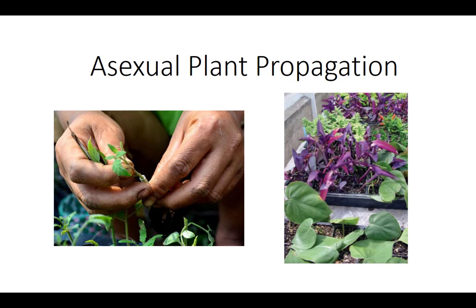One of the most important benefits of asexual propagation is that plants produced by this method are genetically identical to the parent. A plant that is grown from a piece of another plant and is genetically identical to the parent plant is known as a clone. Trees and woody perennials are typically propagated by means of asexual propagation to preserve the genotype clonally and reduce breeding time. I'm Dr. DeBusk, and in this video I'll focus on asexual plant propagation.